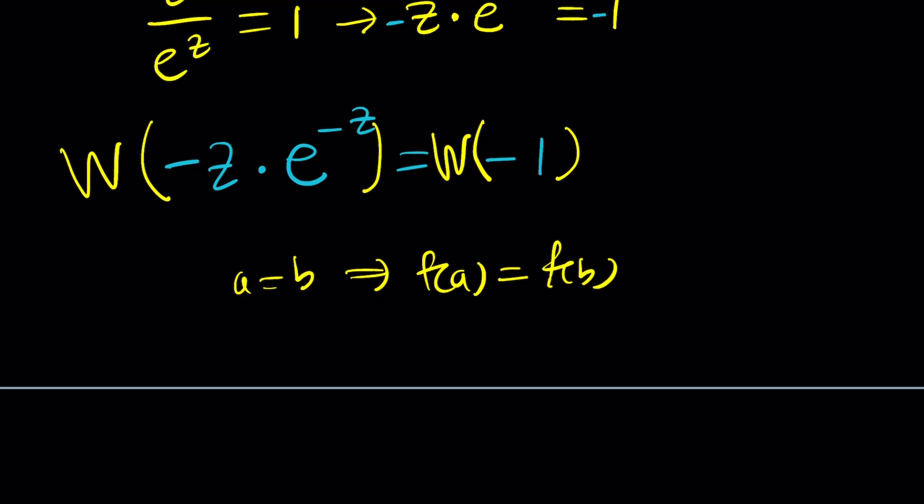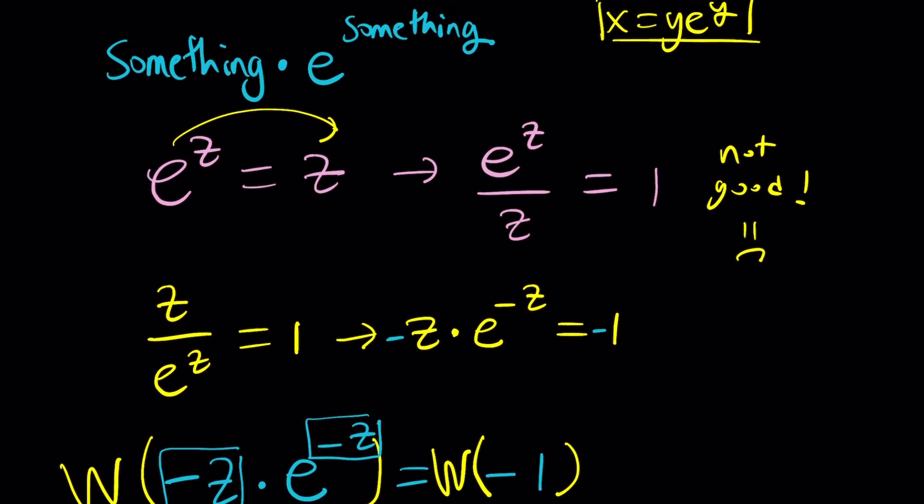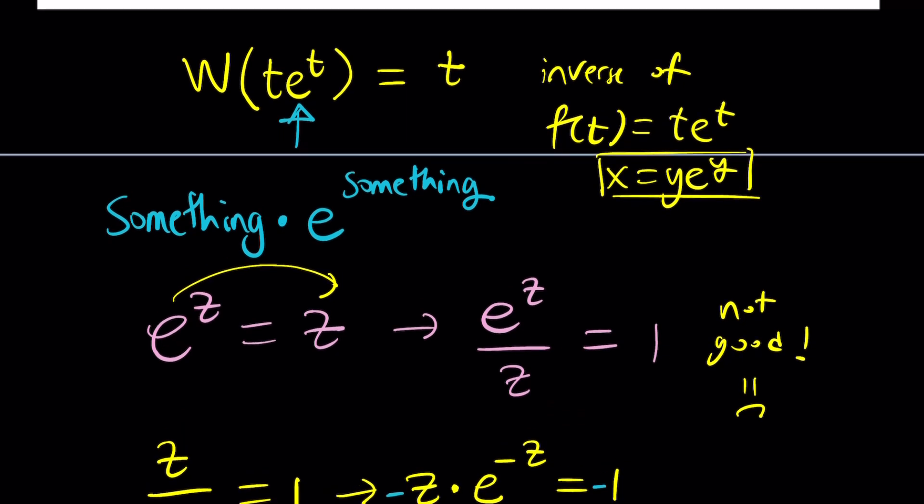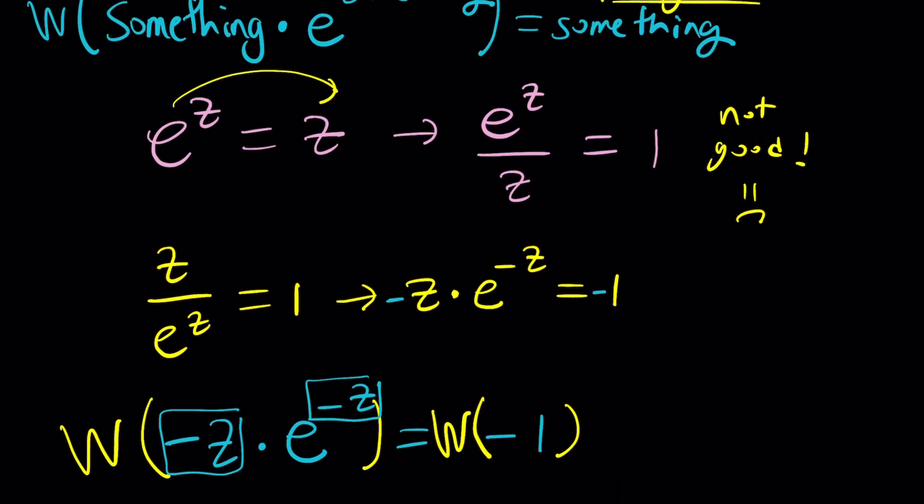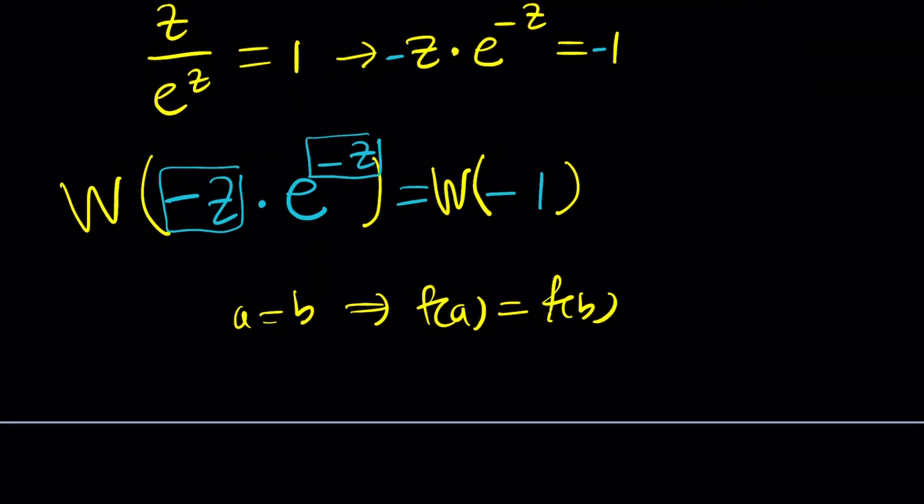The other way is not always correct because that means the function has to be one-to-one. But a function cannot have two different outputs for the same input. I'm talking about normal functions, not the abnormal ones. Anyways, let's simplify both sides. The left-hand side can be simplified because this is our something. So when you apply W to it, remember W(te^t) gave you t. And W of something times e to the something is going to give you something. So W of this is going to give you negative z.